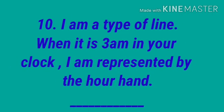And the last question, number 10: I am a type of line. When it is 3 am in your clock, I am represented by the hour hand. So you draw a clock, do 3 am and observe the hour hand, which line it represents.